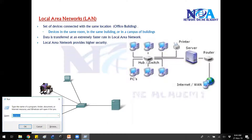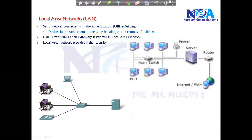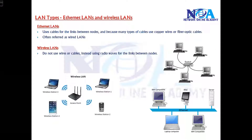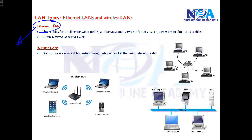We already talked about LAN in our basic classes. Now we'll try to see more detail about LAN in this section. When we talk about LAN, mainly there are two types: we have something called Wired LAN, also known as Ethernet LAN — because Ethernet is a standard — and we have Wireless LAN.